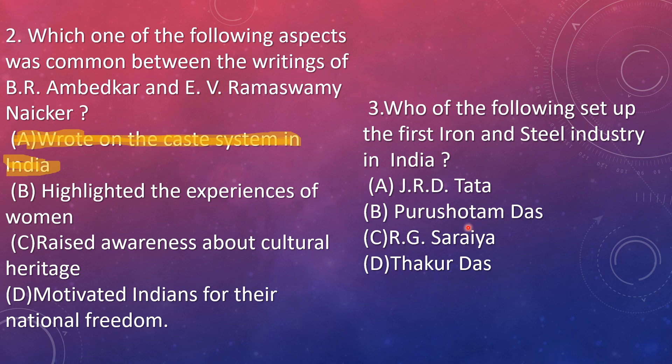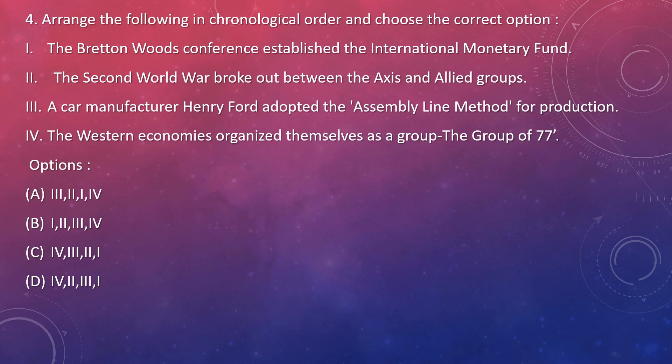Option A is the right answer without even needing to analyze other options because it is a famous industry data point in India — it will be an easy question. Next: arrange the following in chronological order and choose the correct option. They have given some sentences in shuffled order. We have to arrange them — which comes first, which comes second — and we'll deal with all the sentences once.